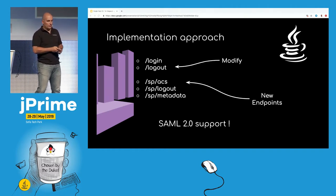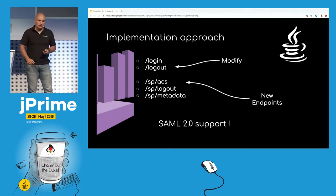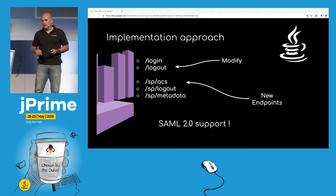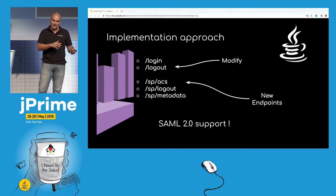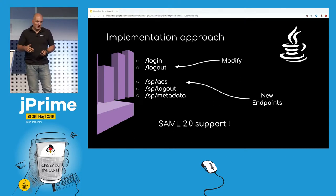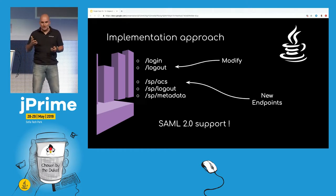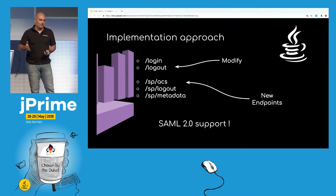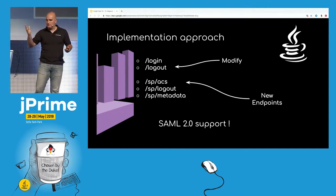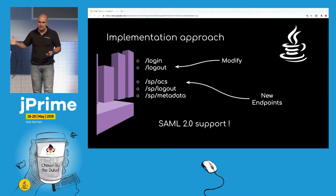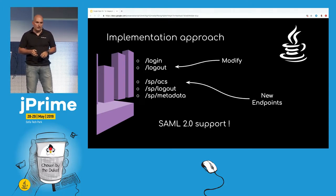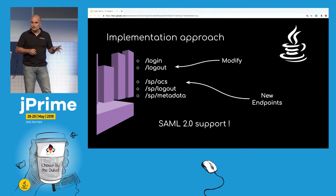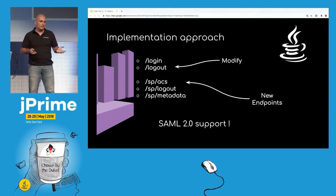The new logout endpoint enables the so-called identity provider logout flow, or single logout. We have single sign-on and single logout. This covers the scenario where a session is terminated on the identity provider — for example, an employee is fired and their account is gone. Via this logout endpoint, the identity provider informs all available services that the session is no longer valid, and it's the service provider's responsibility to terminate it as well.